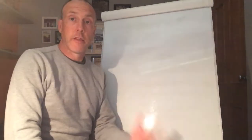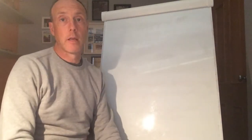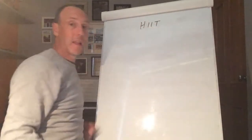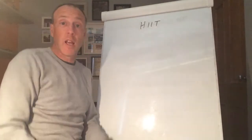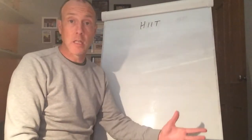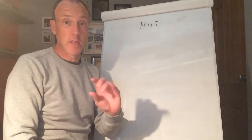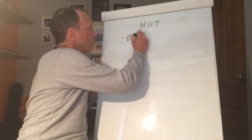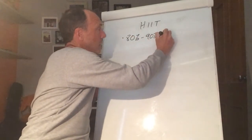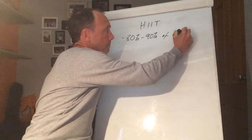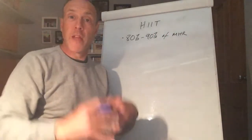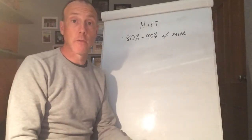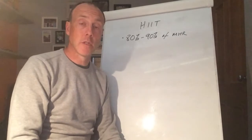This is the third of our sessions on specialist training methods and this session is going to be on HIIT — specifically High Intensity Interval Training. It consists of periods of high intensity work followed by periods of rest. Within this method of training we are looking to work between 80 and 90 percent of maximum heart rate, well above the aerobic training zone, making it quite a stressful method of training.